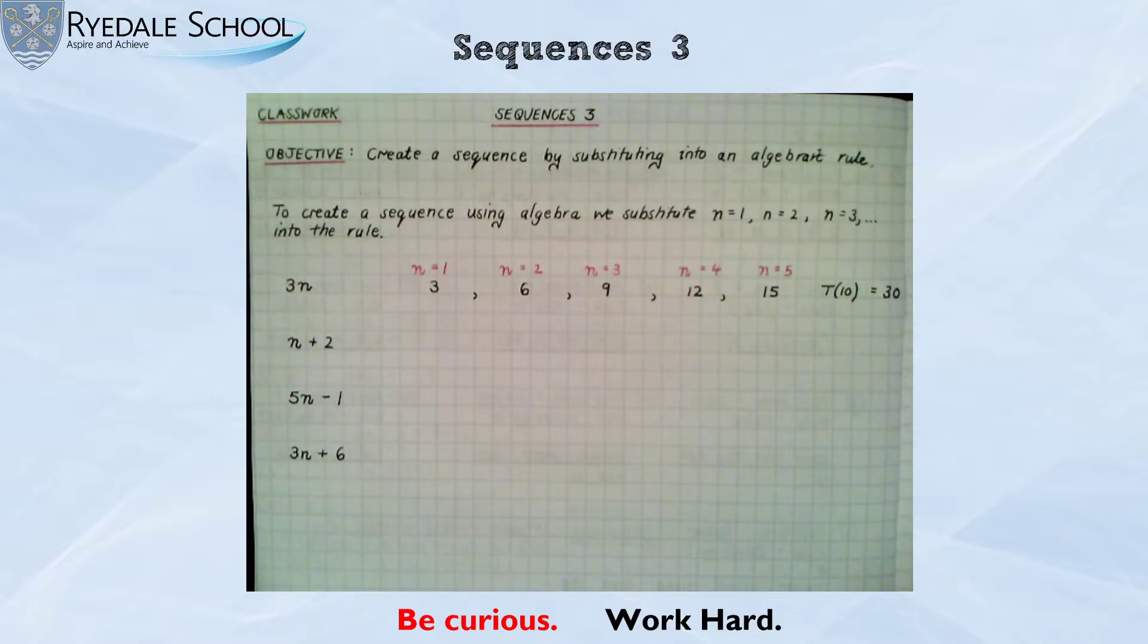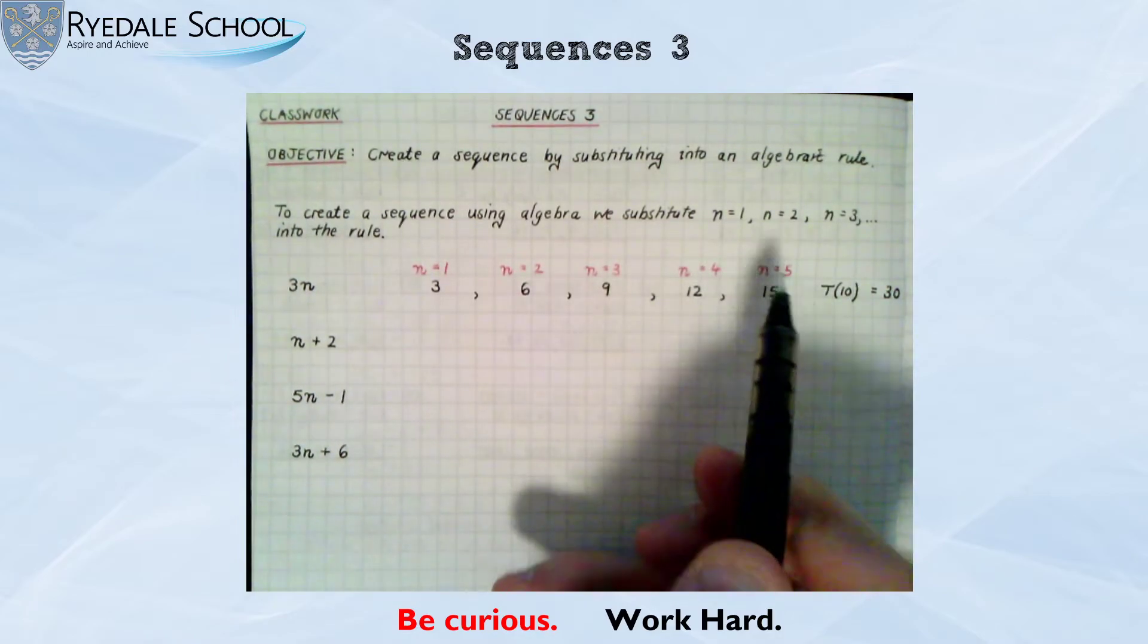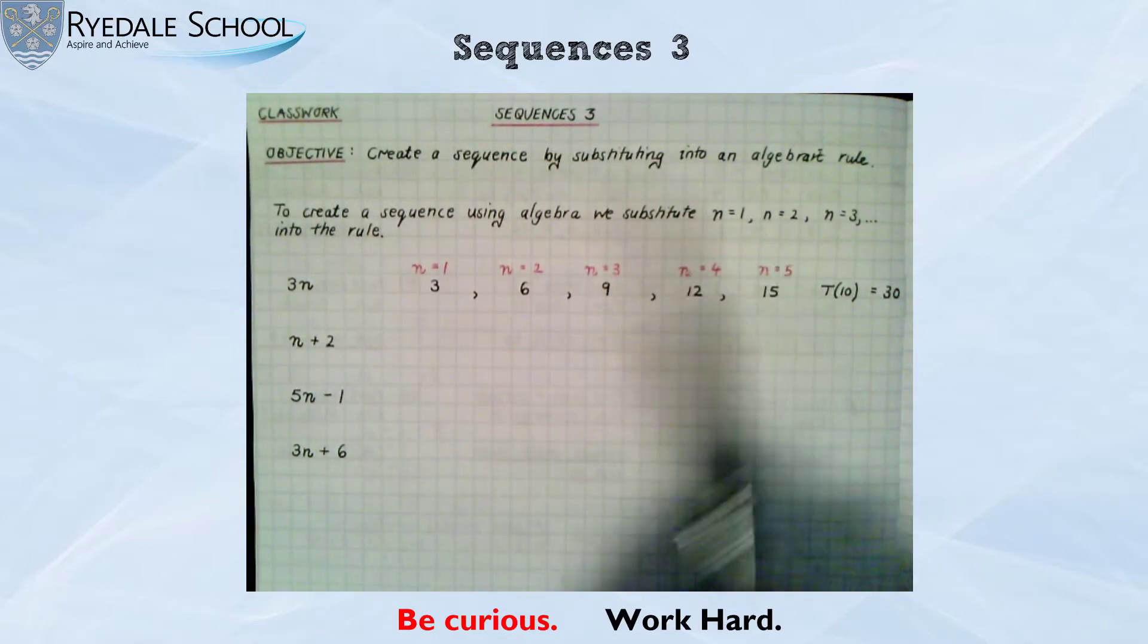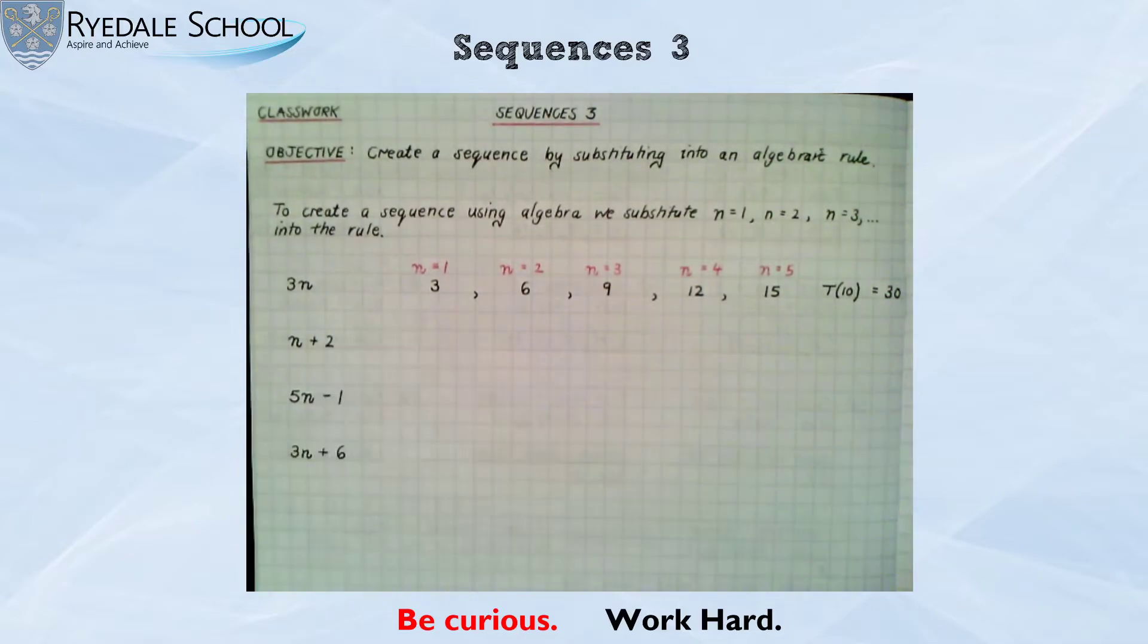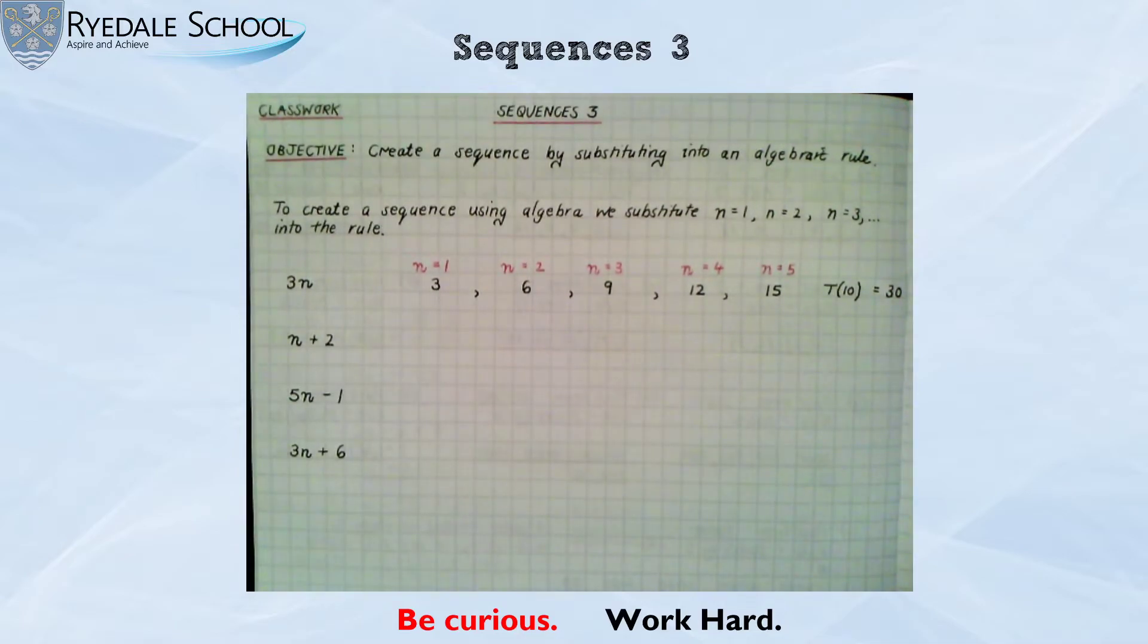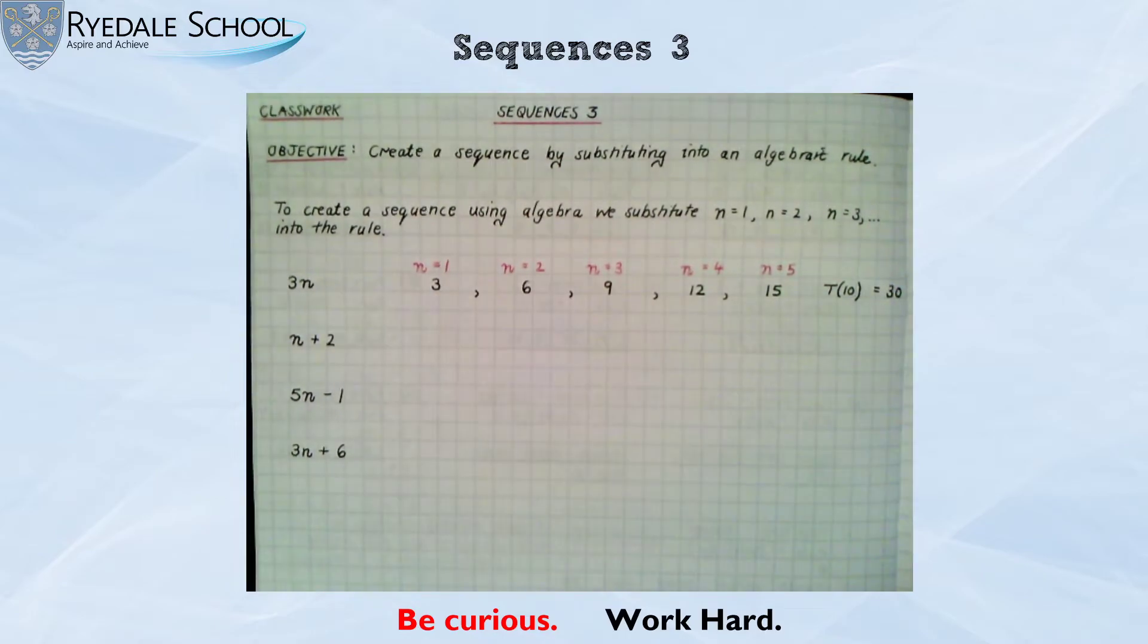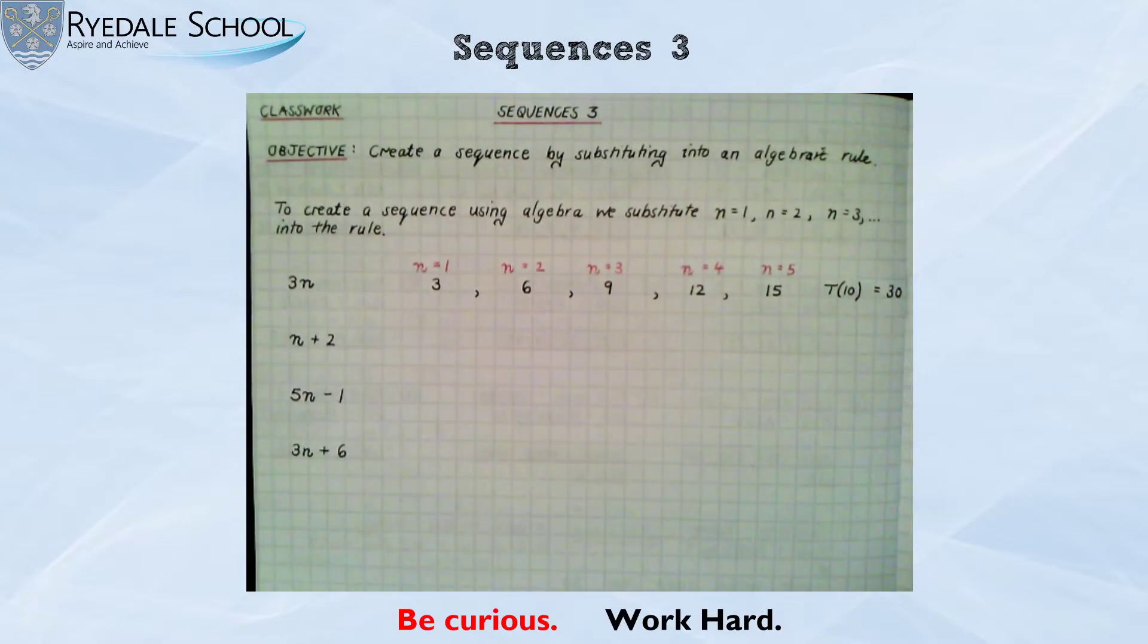I've substituted 1, 2, 3, 4 and 5 to get the first 5 terms. I'm now going to do the same with my other 3 sequences. I'm not going to write n is 1, n is 2, n is 3, n is 4, n is 5 above each of these because I've lined it up in a way that I hope you'll see what we're going to be substituting again. So for my next sequence I've got this rule n plus 2. So when I want the first term I'm going to substitute n is 1. So I need to do 1 add 2 which is 3.